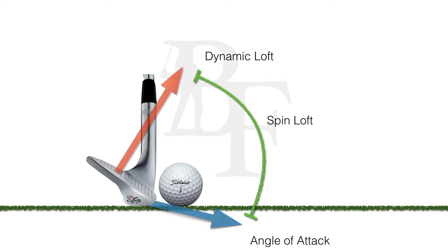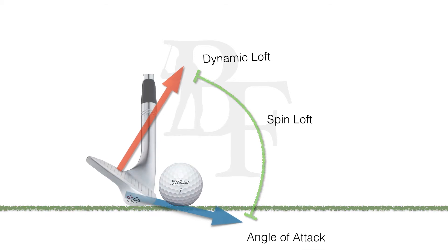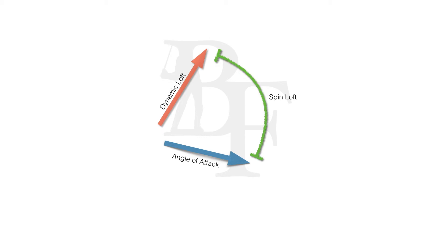And then we've got angle of attack. That is the measurement of the golf club in relation to the ground — is it travelling downwards, is it travelling upwards, is it level to the ground? That's how we get our spin loft number. So, dynamic loft and angle of attack. In this case, our dynamic loft is 40 degrees — the loft that we deliver. The angle of attack is downwards 5 degrees, so the club is travelling downwards at the point of contact. So the spin loft is 45 degrees.